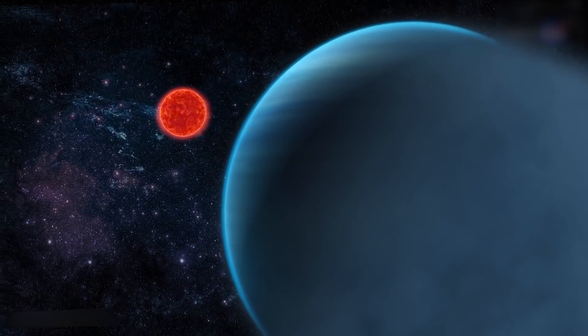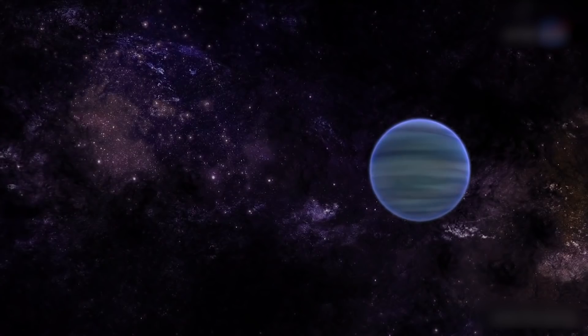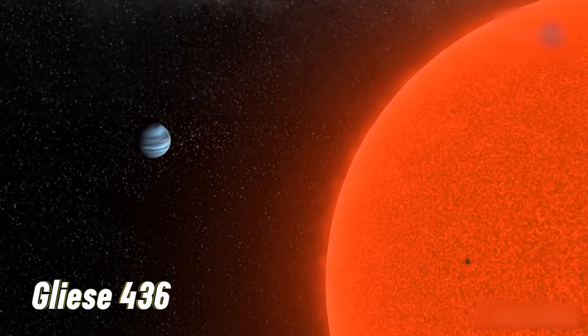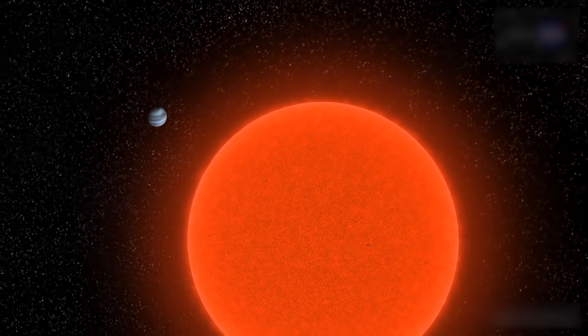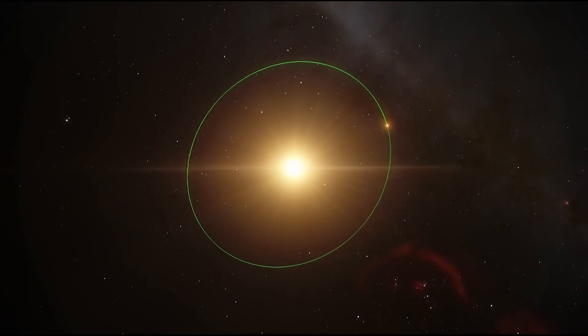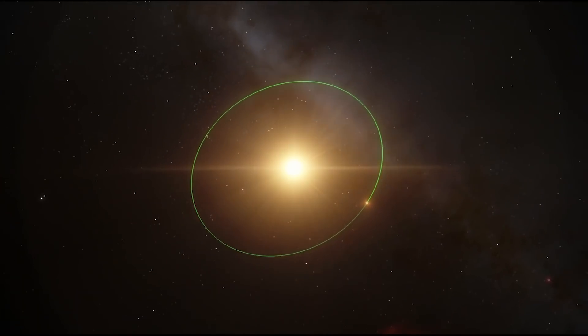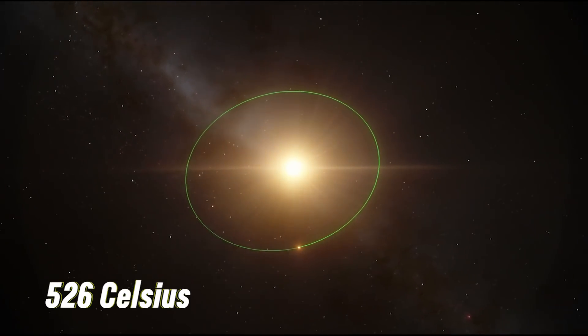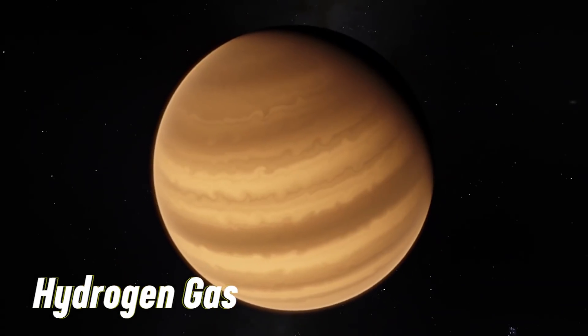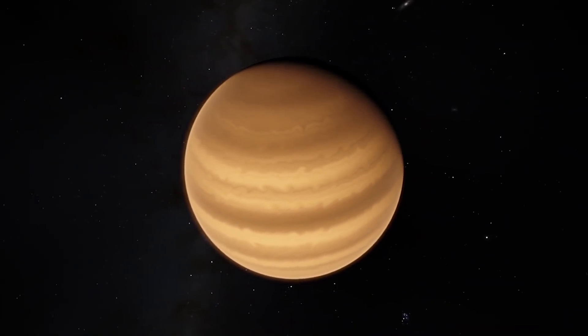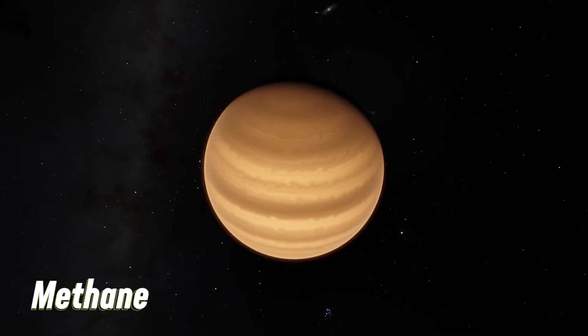Gliese 436b is a Neptune-sized planet that orbits a red dwarf known as Gliese 436, a star that is cooler, smaller, and less luminous than the Sun. Because of this close proximity, the planet's temperatures exceed 526 degrees Celsius, which is hot enough to ward off water in liquid form. Yet current models indicate that a planet like this, which is composed mostly of hydrogen gas and has such high surface temperatures, should have significant quantities of methane in its atmosphere.